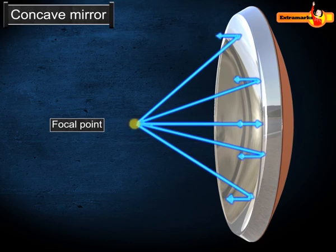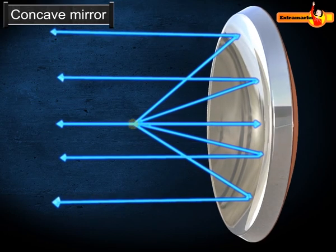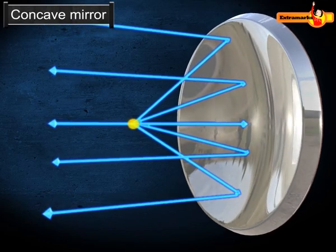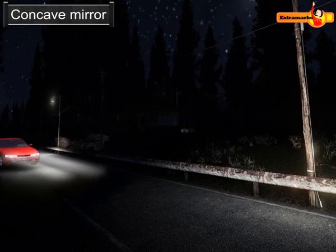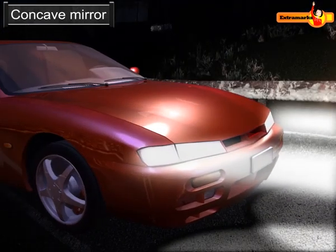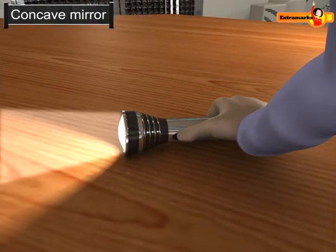When the object is placed at the focal point of a concave mirror, the reflected light rays are parallel and able to produce strong beams of light. This is why concave mirrors are used as reflectors in headlights of vehicles, torches, and searchlights to get powerful beams of light.